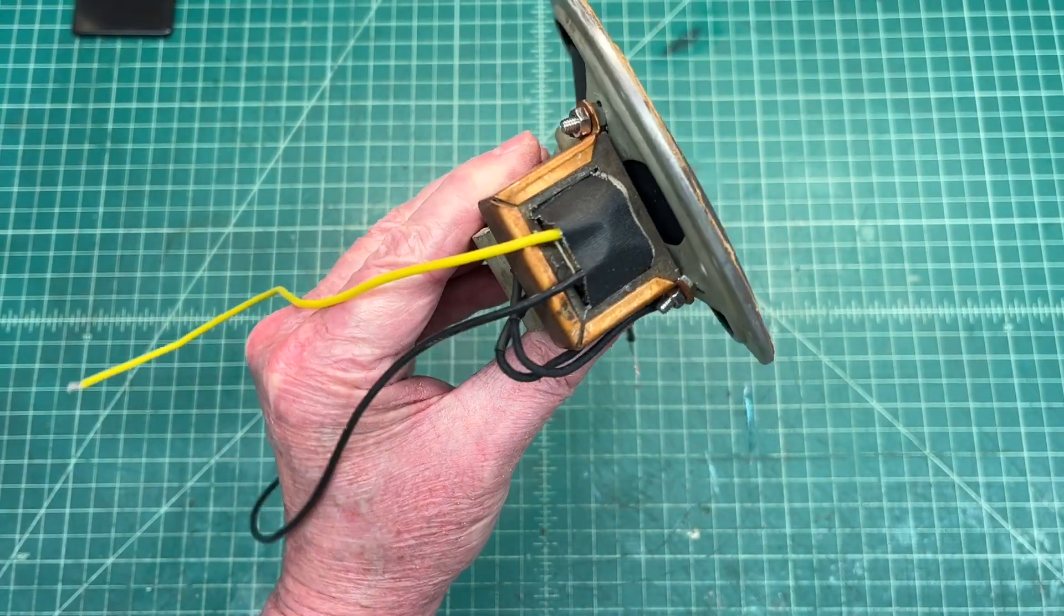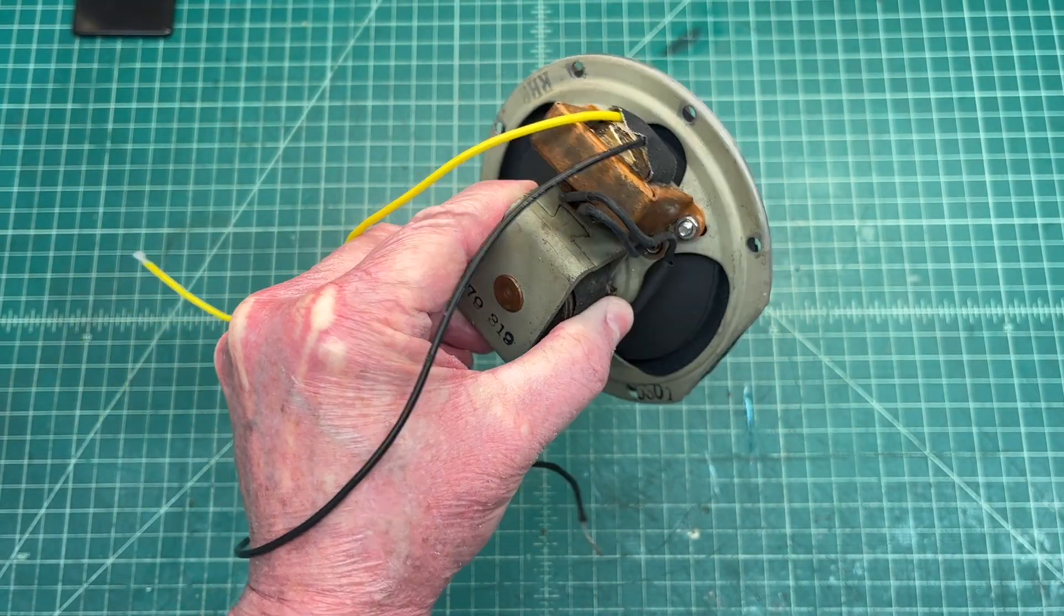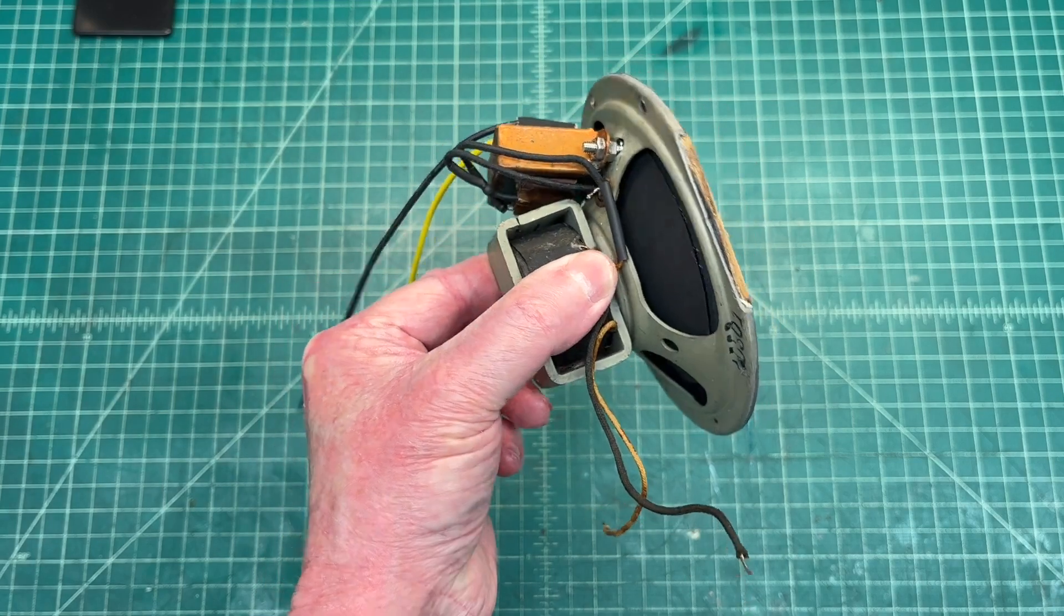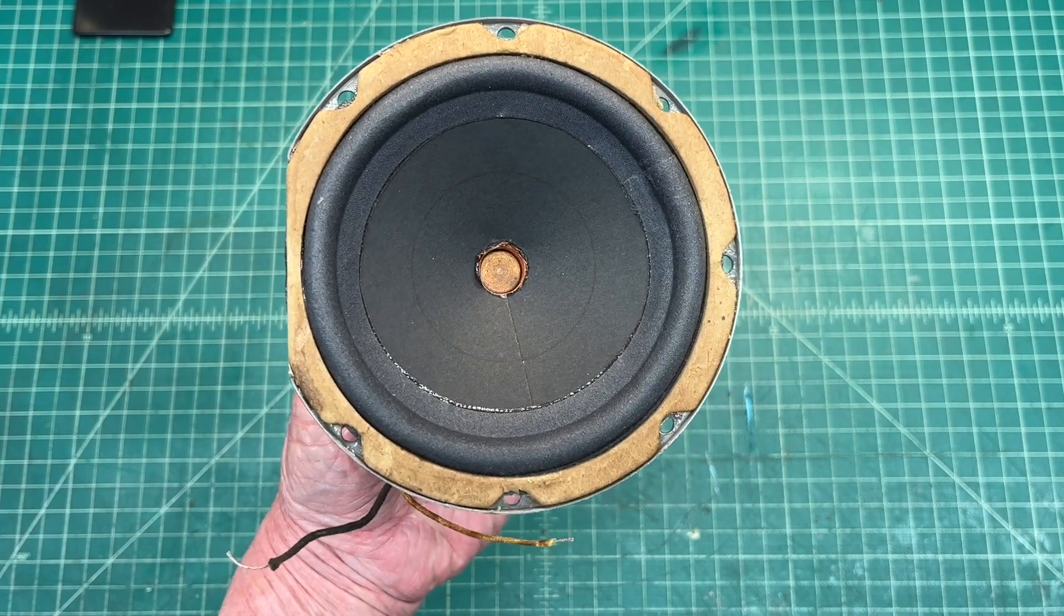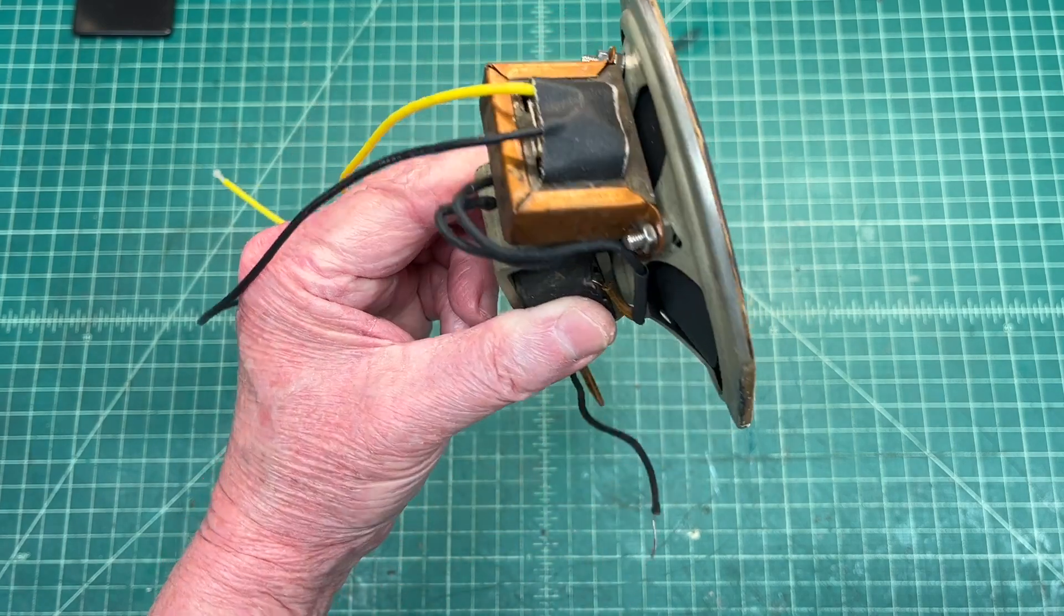And a look at the output transformer mounted back to the speaker frame. Let me energize the field coil to about 30 to 40 milliamps.